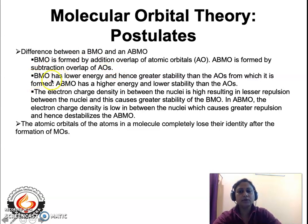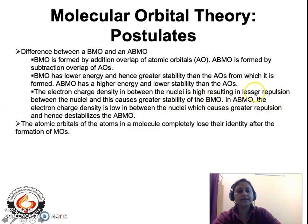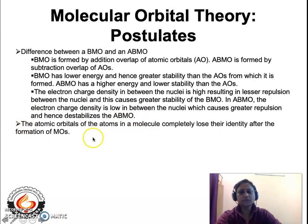The bonding molecular orbital has lower energy and hence greater stability than the parent atomic orbitals, while the antibonding molecular orbital has higher energy and lower stability. The electron charge density between the two nuclei is very high in the bonding MO, resulting in lesser repulsion and greater stability. In the antibonding molecular orbital the charge density is low between the two nuclei, causing greater repulsion and destabilizing it. The last postulate is that the atomic orbitals of the atoms in the molecule completely lose their identity after the formation of the molecular orbitals.